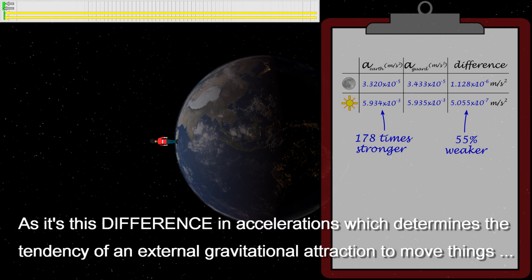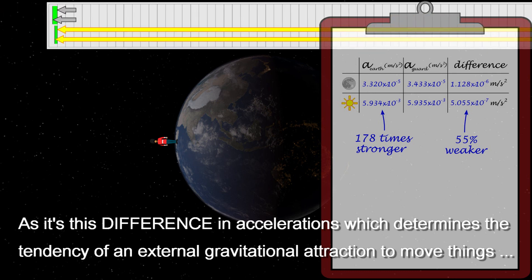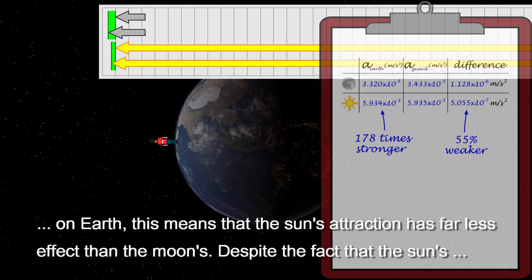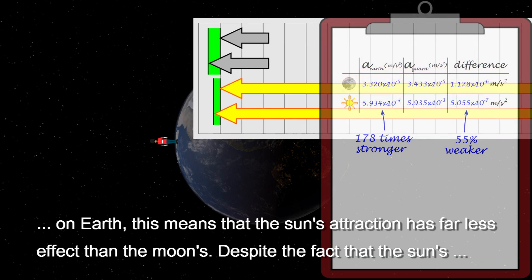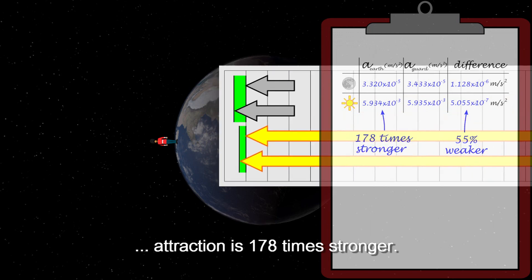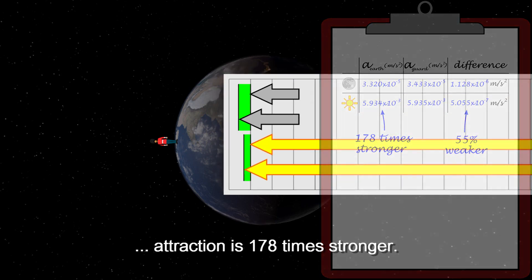As it is, this difference in accelerations, which determines the tendency of an external gravitational attraction to move things on Earth, this means that the Sun's attraction has far less effect than the Moon's, despite the fact that the Sun's attraction is 178 times stronger.